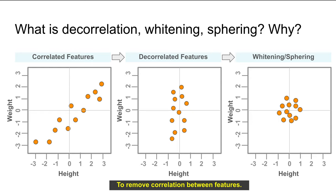What we would like to do is decorrelate the features, as shown in the second plot, where the weight is no longer much dependent on the height. Sphering or whitening is a step further, where each of these features are arranged in a spherical fashion — the so-called sphere — and essentially what we are doing is removing any correlation between the features in our dataset.